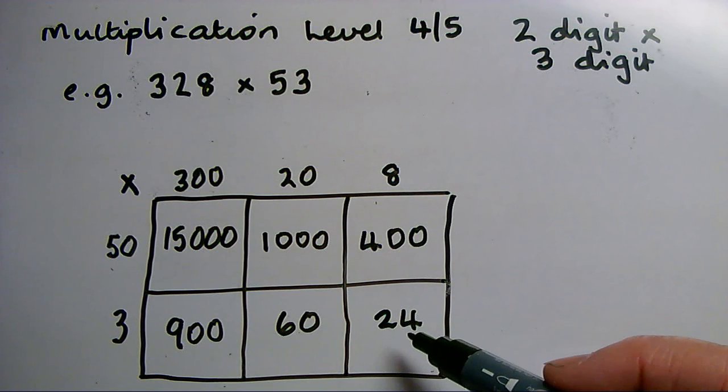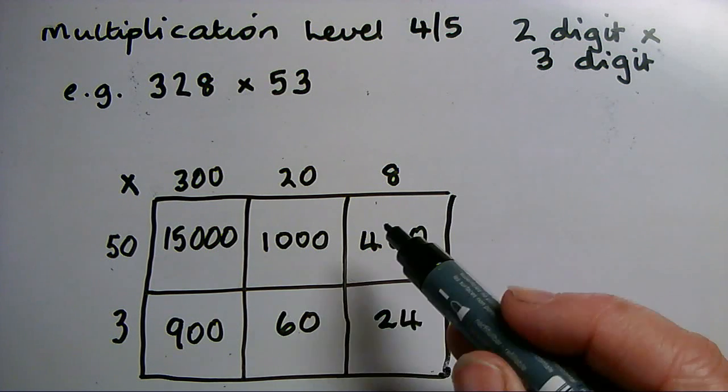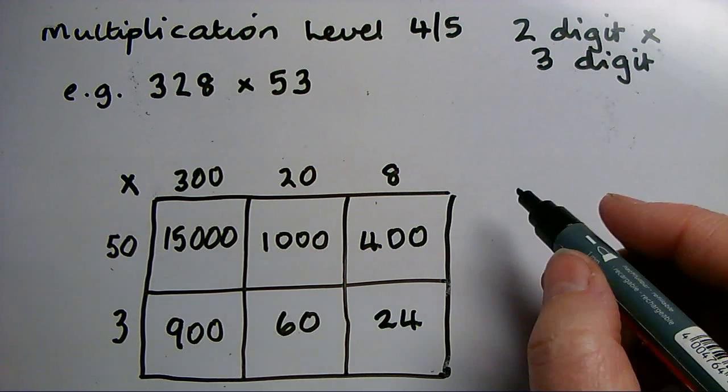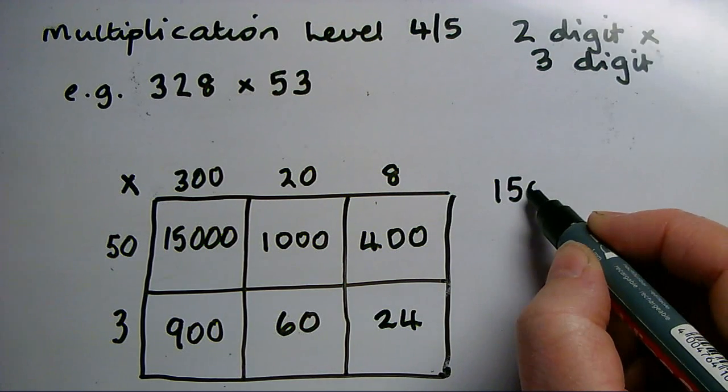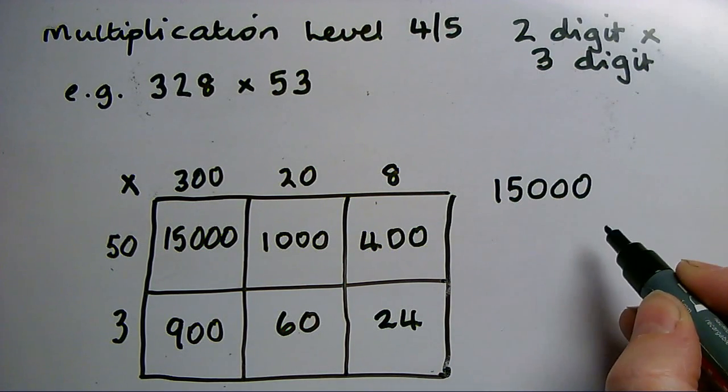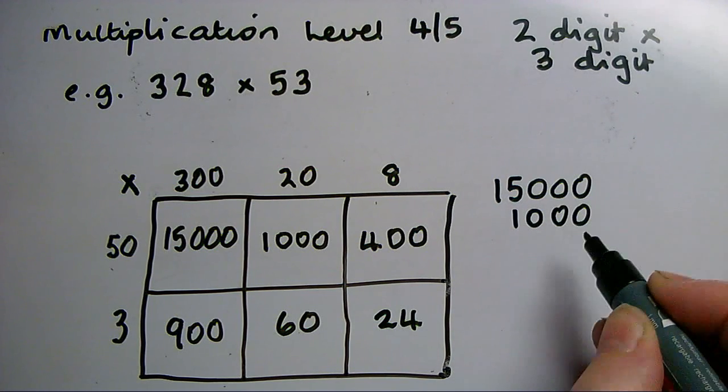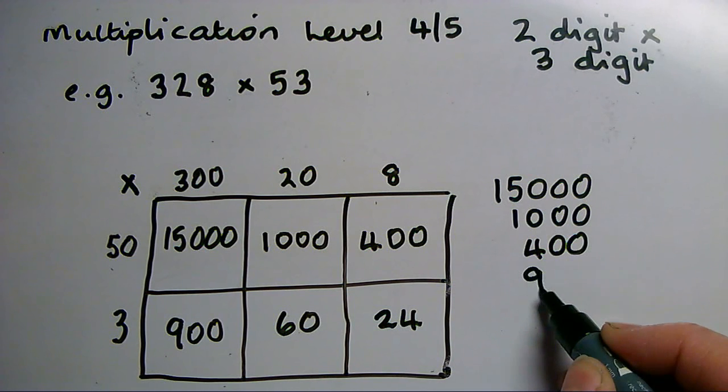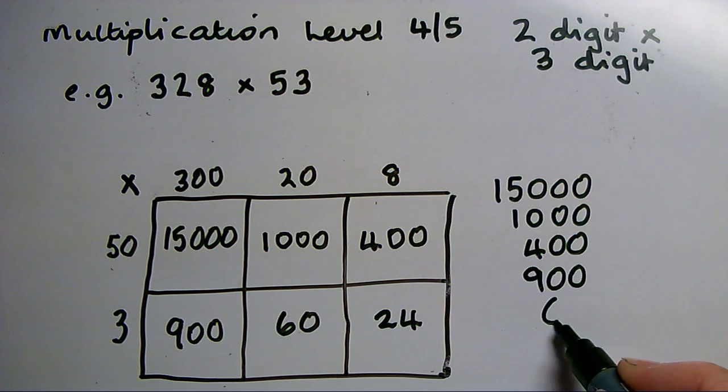Once I've completed all six boxes and I'm happy with my multiplies, I've then got to add all six numbers. So I need to write them underneath each other very carefully using place value, because that's when most multiply sums start to go wrong—if the addition isn't done carefully using place value.